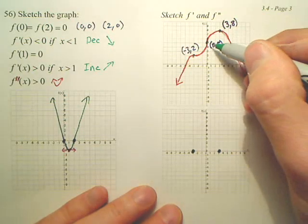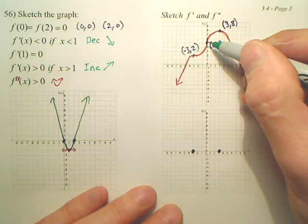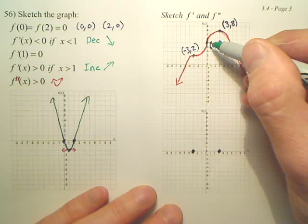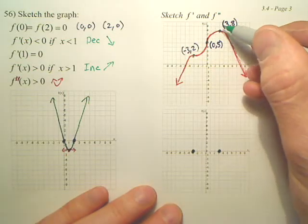Now, at zero, what's my slope? Undefined. Isn't my slope vertical? So do I have a slope at zero? No, it's a cliff. Think of it as straight and then turn.